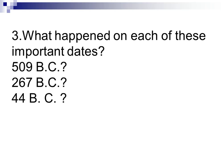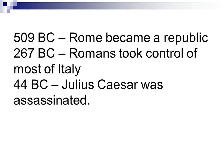Number 3: What happened on each of these important dates — 509 BC, 267 BC, and 44 BC? In 509 BC, Rome became a republic after kicking out their last king, Tarquin the Proud. In 267 BC, the Romans took control of most of the Italian peninsula. And in 44 BC, Julius Caesar declared himself dictator for life and was later assassinated by his fellow senators.